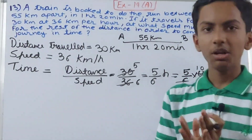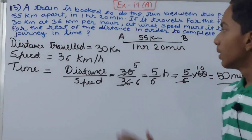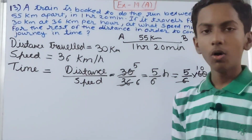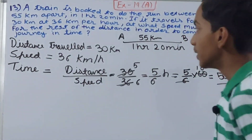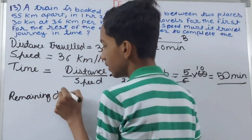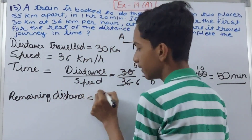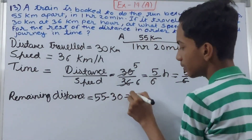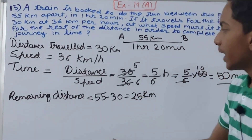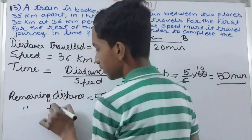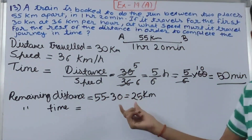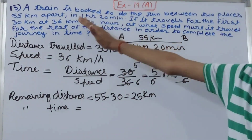Now we need to find the remaining distance and the remaining time. For the remaining distance: 55 minus 30 equals 25 kilometers. For the remaining time, the total time is one hour and 20 minutes.